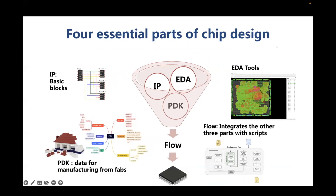First, let's review the four essential parts of chip design. When we design a chip, we need four parts: IP — we need to buy IP like a RISC-V processor core, or a DDR controller, or a USB controller, or a PCI controller, to build a SOC chip. The second part is the EDA tool — we need to turn the code of the chip into a layout, because the foundry, the fab, needs a layout for manufacturing.